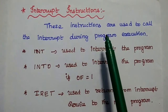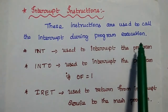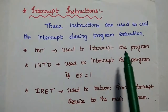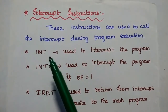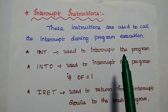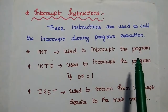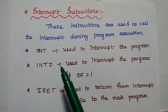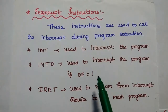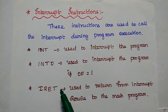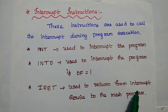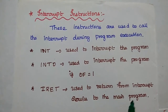Next are Interrupt Instructions. These instructions are used to call an interrupt during program execution. INT — used to interrupt the main program running in the microprocessor. INTO — used to interrupt the program if the overflow flag is equal to 1. IRET — Interrupt Return, used to return from the interrupt service routine back to the main program.